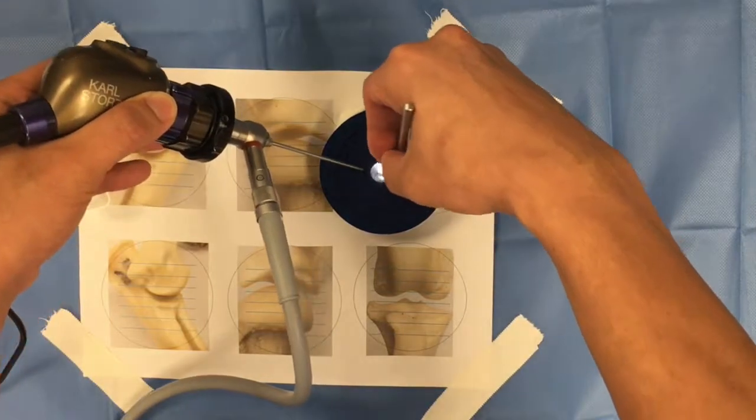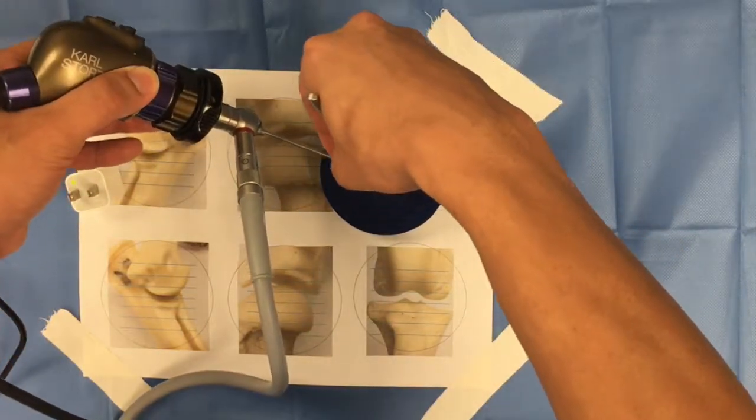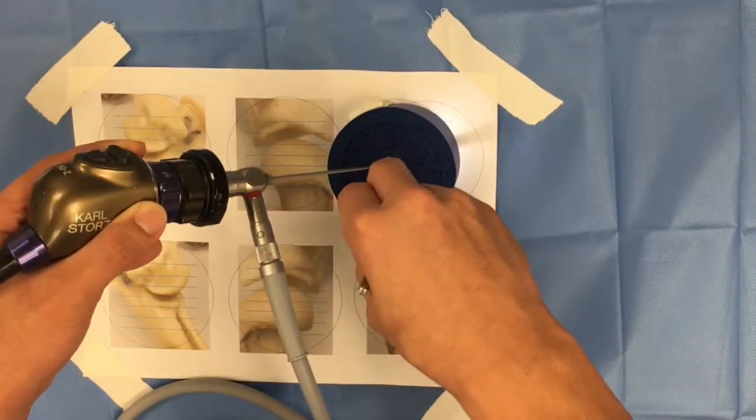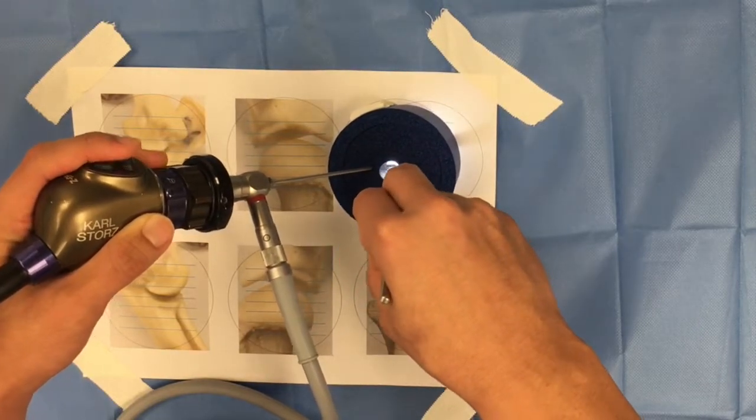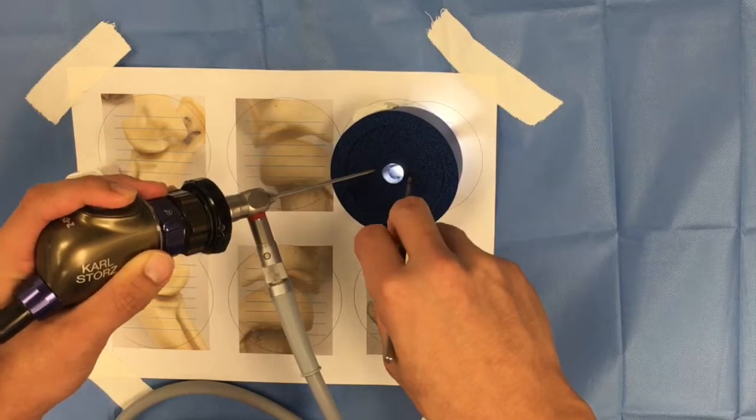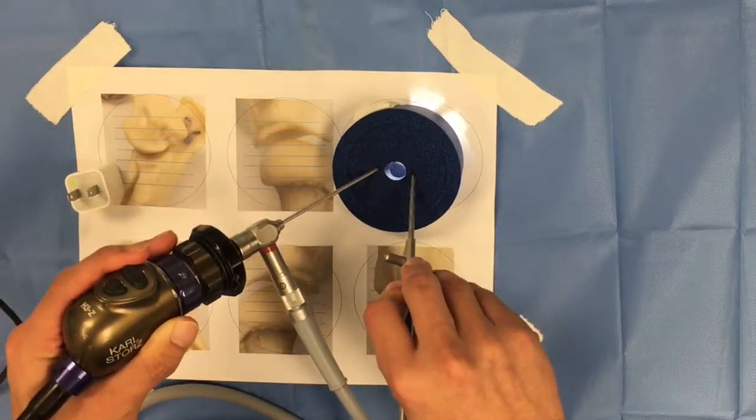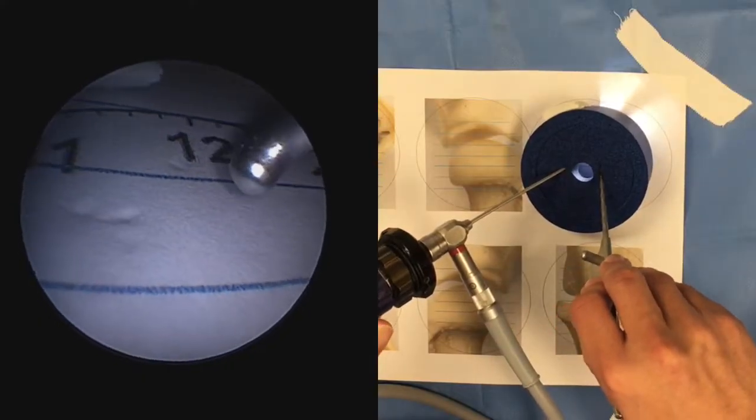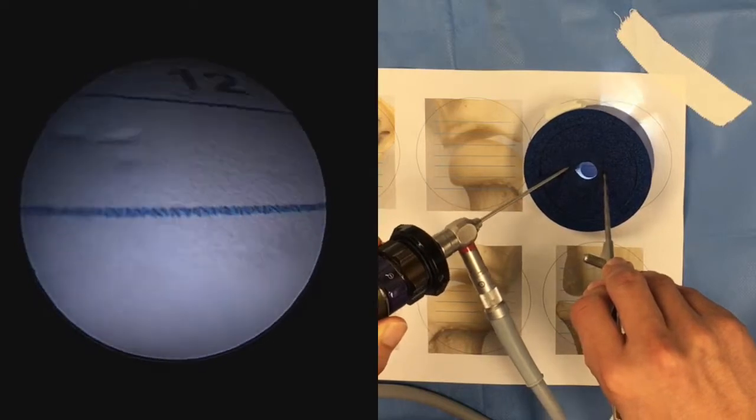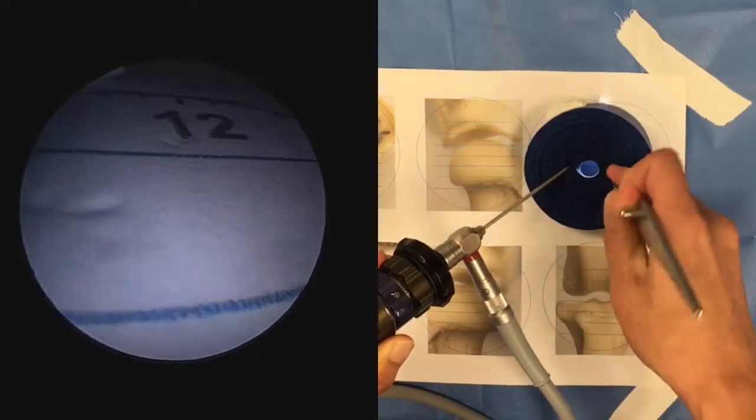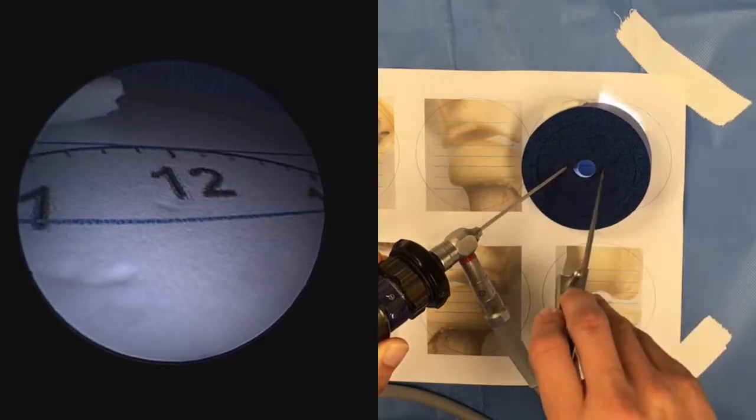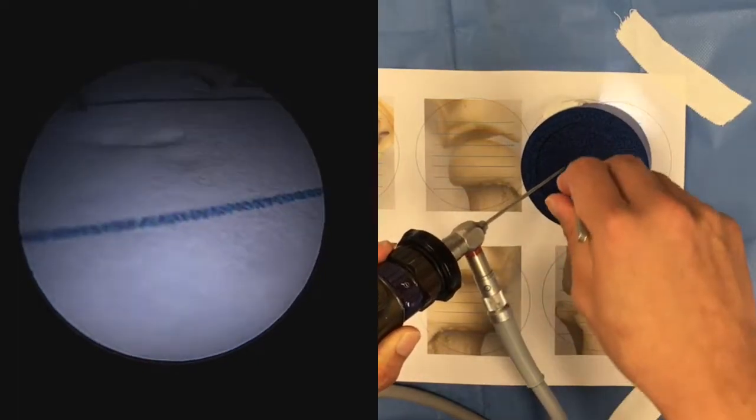In this exercise we are practicing triangulation with an instrument in the first case a probe. It's called triangulation because we have to angle the probe or instrument relative to the arthroscope in a triangular manner. What I'm showing you first is that it can be quite difficult to triangulate or find the tip of the instrument if the field of view is very small.